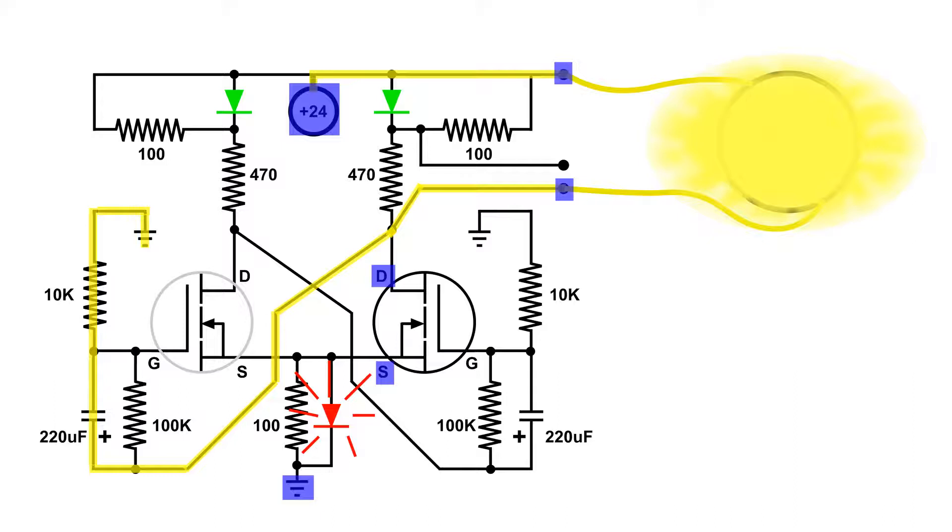But as this is going on, this path is charging up the right 220 microfarad capacitor, and it will turn off the right side.